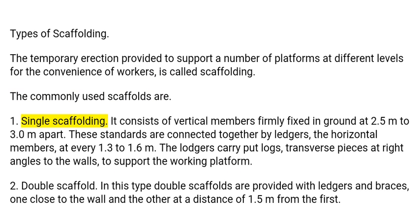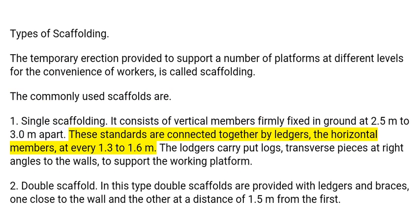Single scaffolding consists of vertical members firmly fixed in ground at 2.5 meters to 3.0 meters apart. These standards are connected together by ledgers, the horizontal members, at every 1.3 to 1.6 meters. The ledgers carry putlogs, transverse pieces at right angles to the walls, to support the working platform.